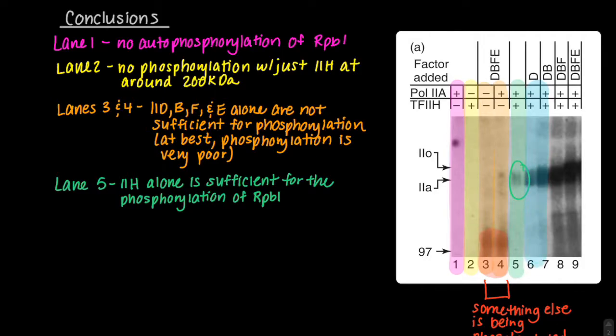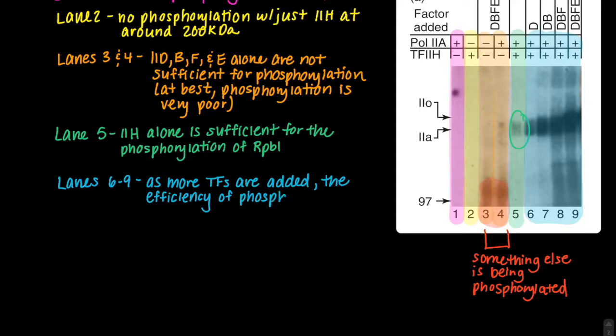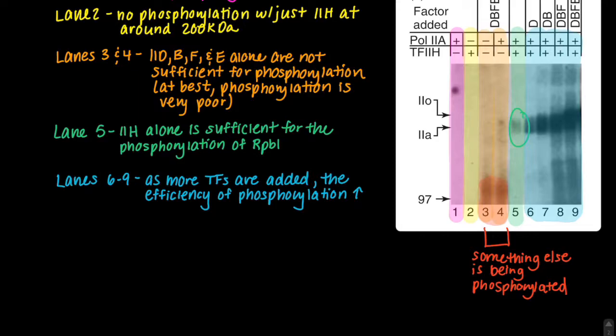Finally, lanes 6 through 9, which are highlighted in blue, contain both Pol 2A and TF2H, along with increasing amounts of other general transcription factors. From these lanes, we can see that as more transcription factors are added, the efficiency of phosphorylation also increases. So while lane 5 told us that TF2H could phosphorylate RPB1 on its own, we can see that phosphorylation is much greater with all the transcription factors together.